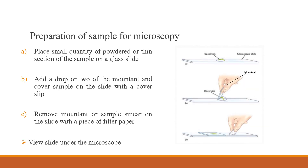To prepare a slide for microscopy, a small quantity of powdered or thin section of the softened whole sample is placed on a clean glass slide. A few drops of mountant such as glycerol are dropped on the specimen and covered with a cover slip. Clean up excess mountant or sample around the glass slide with a piece of filter paper and view the slide under the microscope.